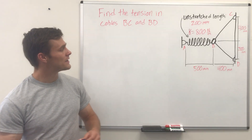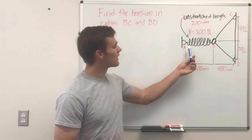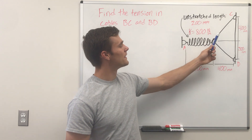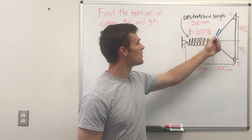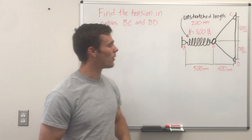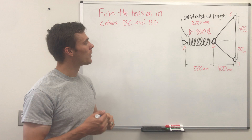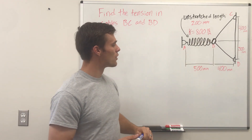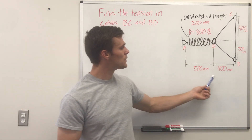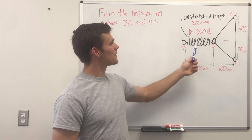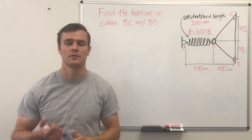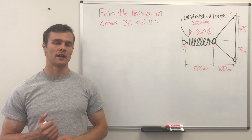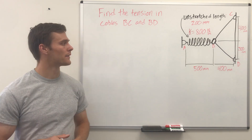What we have here is a spring that is attached to the wall and it's pulling on a ring that is attached to cables that are also attached to a wall. What we need to find is the tension in both of these cables. It gives us a few measurements, the K value of the spring, and the unstretched length of the spring so we can find the force that the spring is pulling with.